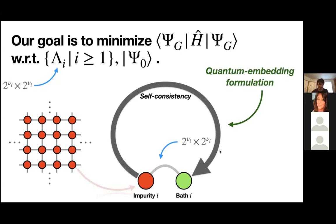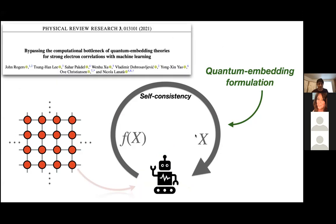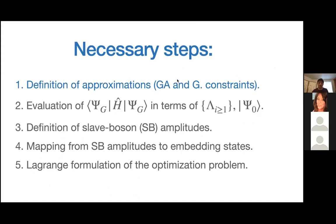One more slide about the machine learning idea — this is not something you'll use this afternoon, but it is implemented in the code for specific cases. One can capitalize on the universality of this embedding structure and use machine learning to speed up the process. You train a machine before making any calculations to perform the computational bottleneck operation, making the cost comparable to bare DFT approximations. I'll leave the reference for those interested.